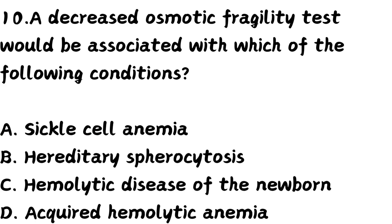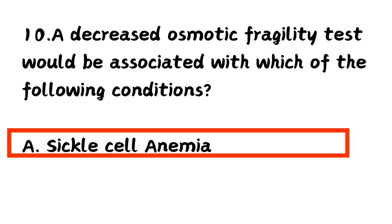Question number 10. A decreased osmotic fragility test would be associated with which of the following conditions? Option A, sickle cell anemia. Option B, hereditary spherocytosis. Option C, hemolytic disease of the newborn. Option D, acute hemolytic anemia. The right answer is Option A, sickle cell anemia. In sickle cell anemia, there is a decreased osmotic fragility.